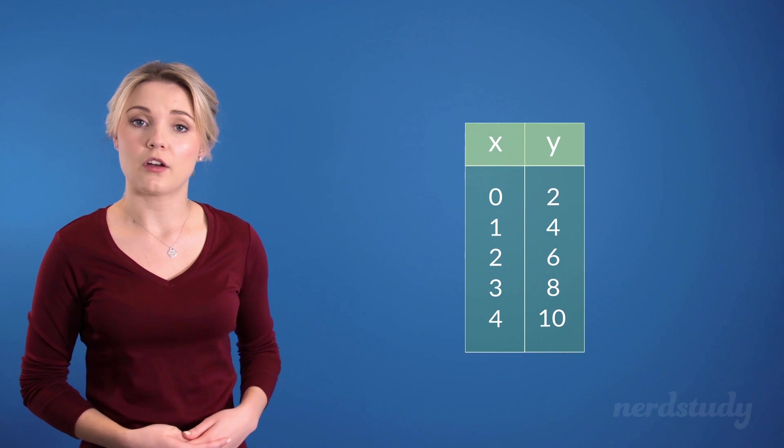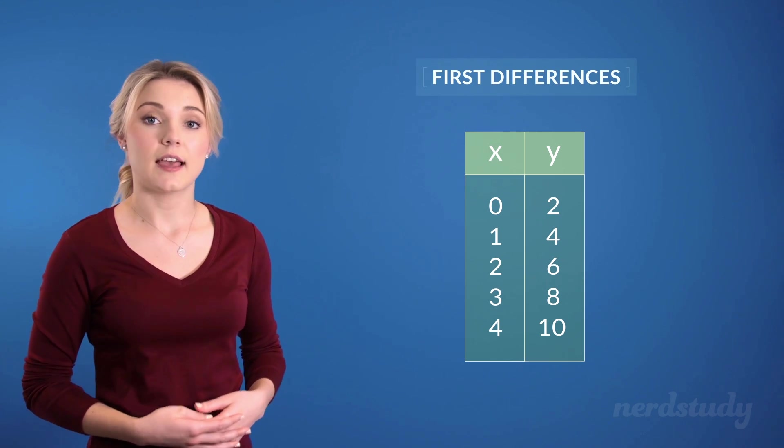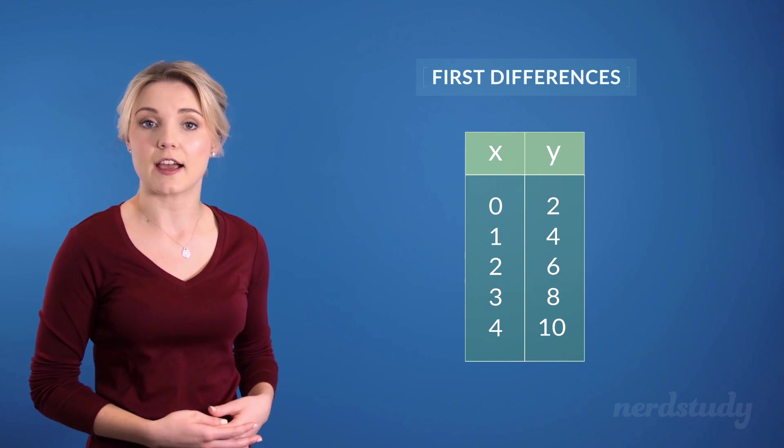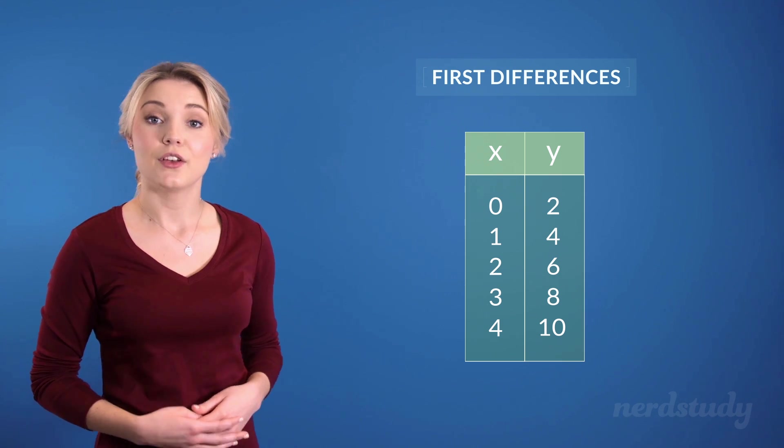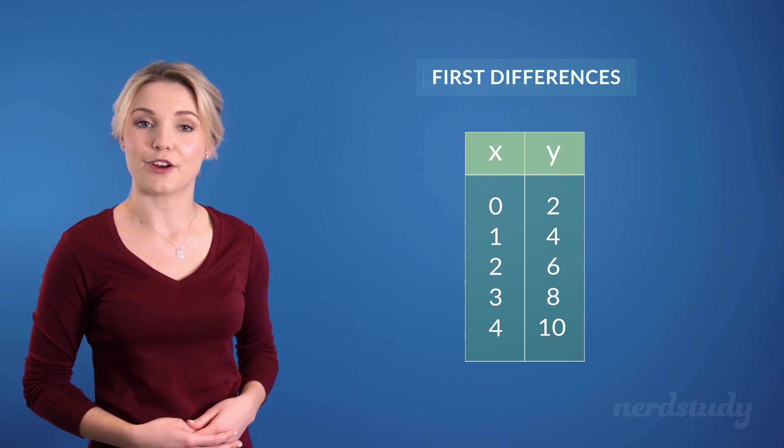Well, we can use something called first differences to help us determine if this graph is actually a straight line or not. So here's how we can find the first differences of a graph.